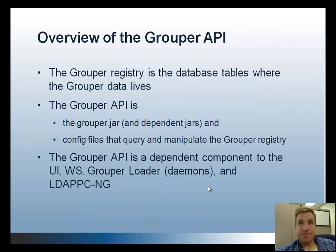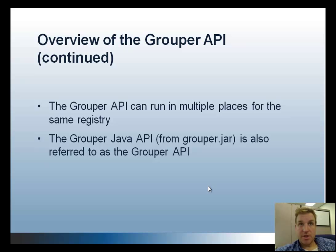The Grouper registry is what we call the database tables where the Grouper data lives. The API is the Grouper jar and the dependent jars that manipulate the Grouper registry. The Grouper API is a dependent component for the UI, web service, loader, provisioning, etc., and can run in multiple places against the same registry — for instance, a UI deployment that's different than a web service deployment, both talking to the same database, or multiple load-balanced UIs. There's also a Grouper Java API inside the Grouper jar, also referred to as the Grouper API, so it has two definitions.